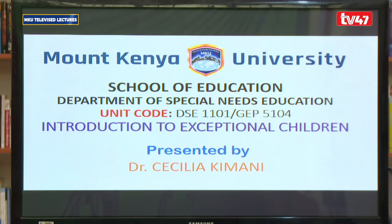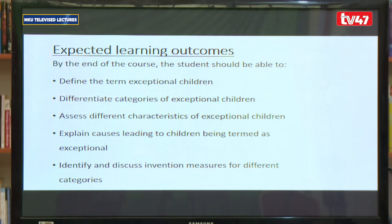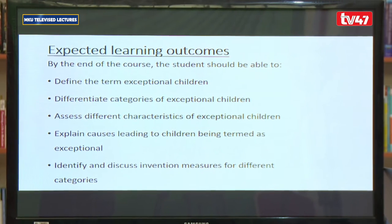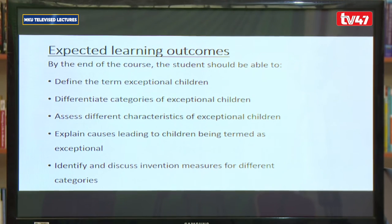We'll start by looking at the expected outcomes. By the end of this course, students would be expected to be able to define the term Exceptional Children, differentiate categories of Exceptional Children, assess different characteristics of Exceptional Children, explain causes leading to children being termed as Exceptional, and identify and discuss intervention measures for different categories.